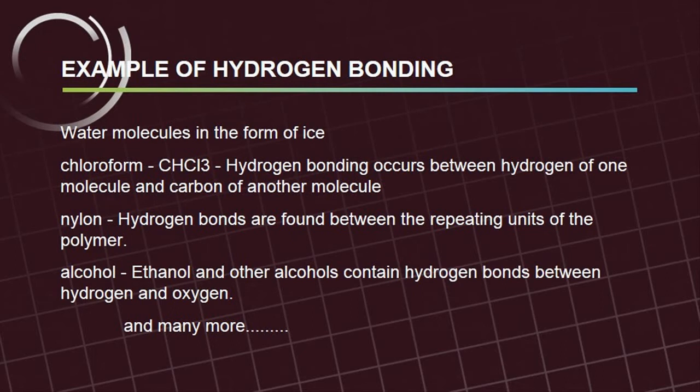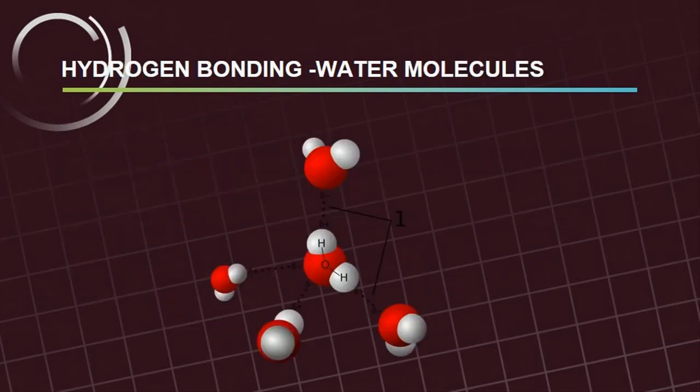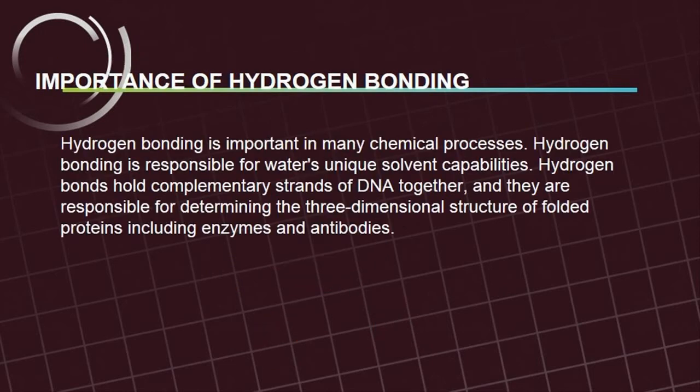And the carbon of another molecule. Nylon: hydrogen bonds are found between the repeating units of the polymer. Alcohol: ethanol and other alcohols contain hydrogen bonds between hydrogen and oxygen, and many more.